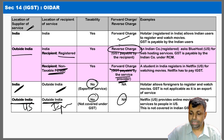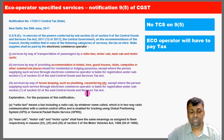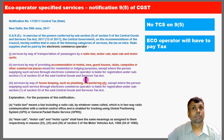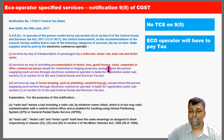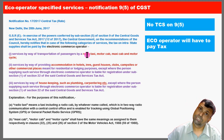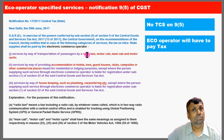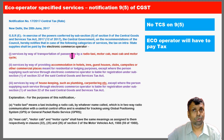This covers the tax treatment for OIDAR — online services. The e-commerce operator concept under Section 9(5) is a different concept. People covered by Section 9(5) are not covered by Section 14 of IGST (OIDAR), because the operator itself is responsible as if they are the service provider. Section 9(5) operators have separate treatment, and Section 14 OIDAR operators have separate treatment altogether.